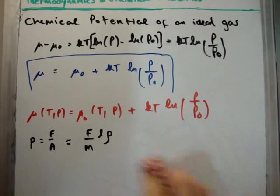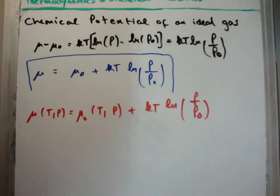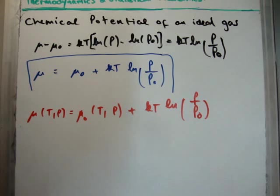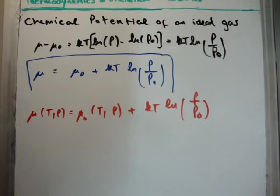So going back to the equation that I have in red, this particular equation indicates how the chemical potential varies with pressure. Or, because pressure is proportional to density, it also indicates how the chemical potential varies with density. So this is the chemical potential of an ideal gas.